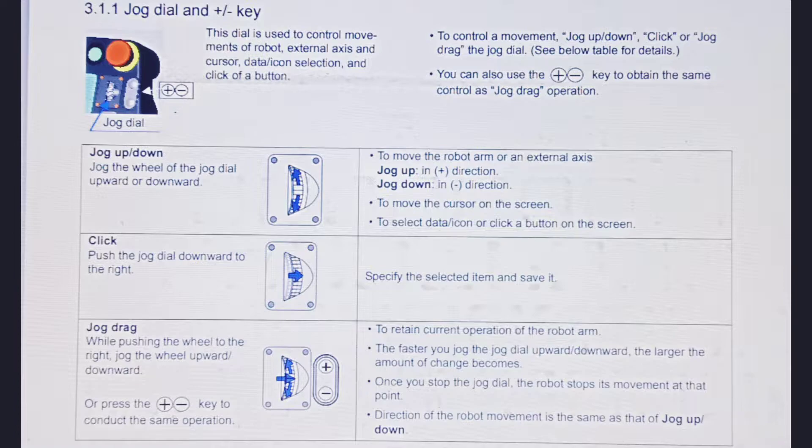To control a movement, jog up/down, click, or jog drag the jog dial. You can also use the plus/minus key to obtain the same control as jog drag operation.